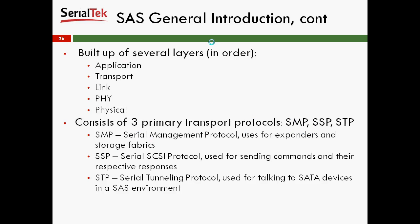SAS consists of three primary transport protocols: SMP, SSP, and STP. SMP is the Serial Management Protocol, and its primary use is for expanders and storage fabrics. SSP is Serial SCSI Protocol, used for sending commands and their respective responses. STP is Serial Tunneling Protocol, used for talking to SATA devices in a SAS environment. SAS includes SATA in its storage environment — in a storage network you'll have your near-line storage, which will be your SAS drives, and your far-line storage, which is generally long-term storage consisting primarily of Serial ATA.